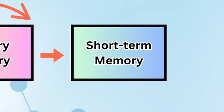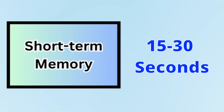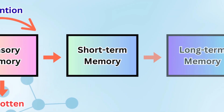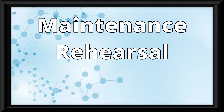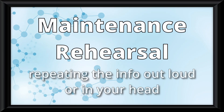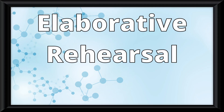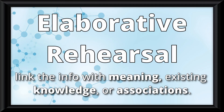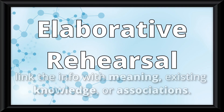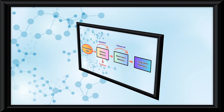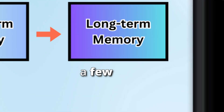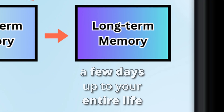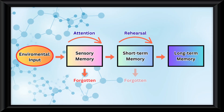This information will last in the short-term memory for 15 to 30 seconds. However, for information to be passed into the long-term memory, you have to rehearse it. And I'm not talking about basic maintenance rehearsal — that is just repeating the info out loud or in your head. I'm talking about elaborative rehearsal, where you link the info with meaning, existing knowledge, or associations. If you successfully do that, the info will get transferred into your long-term memory, where it will stay a few days up to your entire life. Of course, if you didn't rehearse, you would just forget the info.